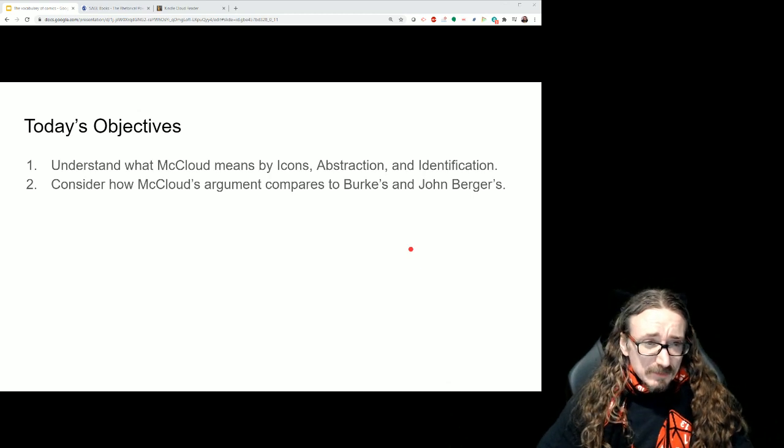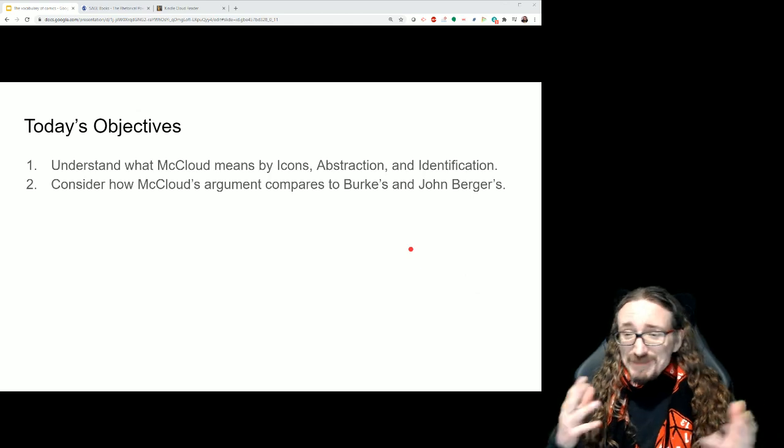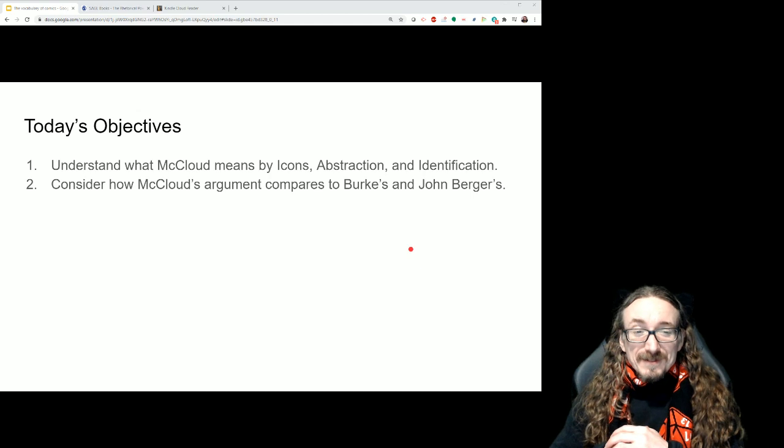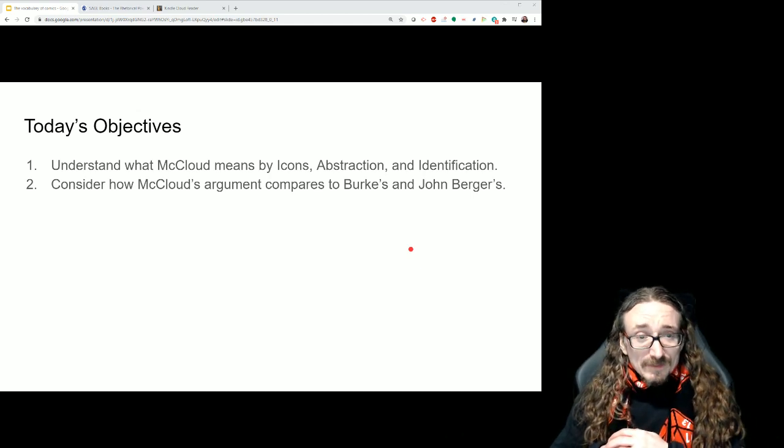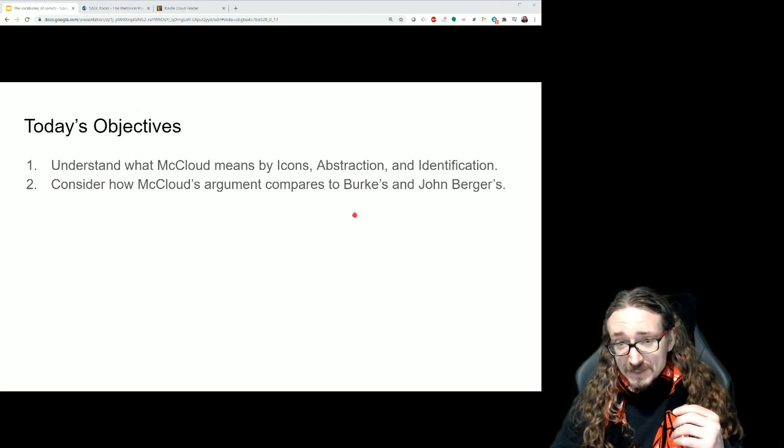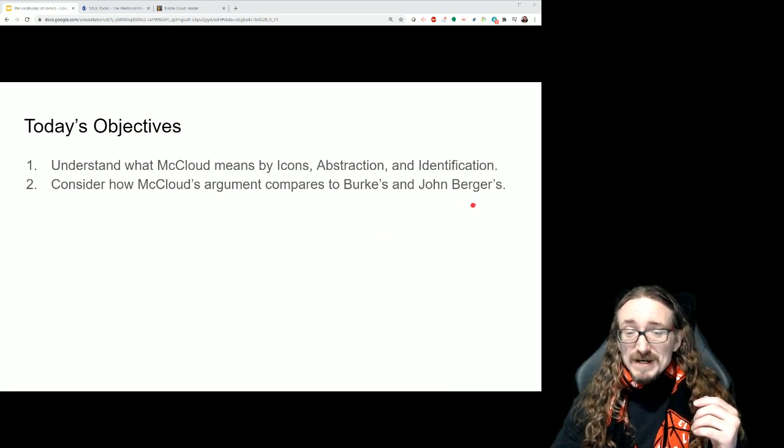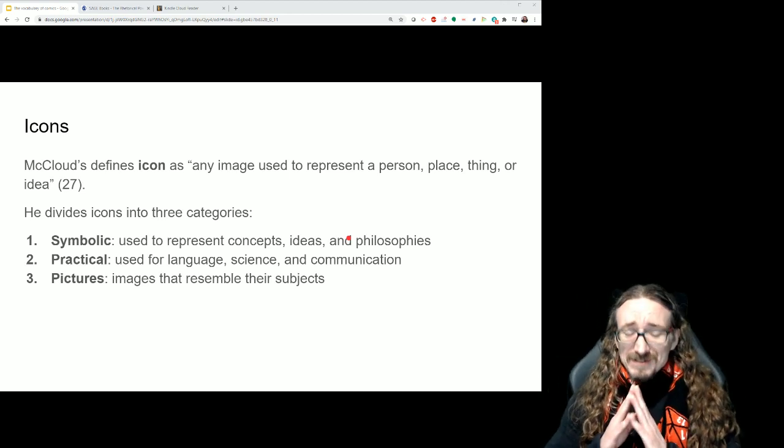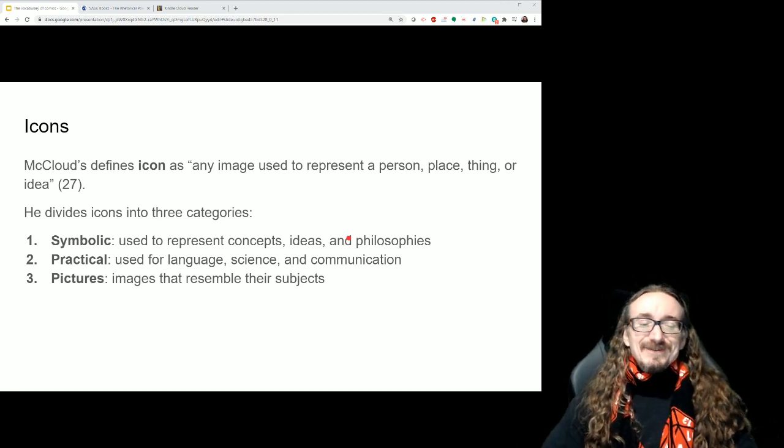In this lecture, we will start by talking about what McCloud means by some of his vocabulary. Remember, part of this book is coming up with a vocabulary, a terminology, a jargon for comics. He'll talk about icons, abstraction, and identification. Then we'll compare some of what McCloud says in this chapter to what Kenneth Burke had to say in the dramatism chapter of Sellnow. And we'll also talk a little bit about John Berger's documentary series for the BBC, a very classic series called Ways of Seeing.